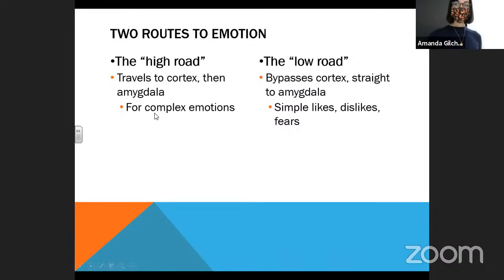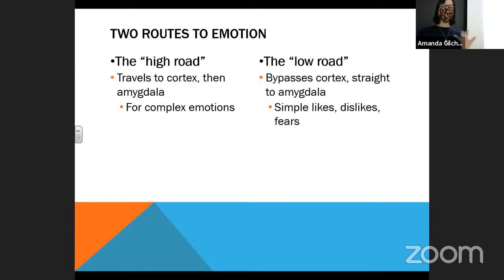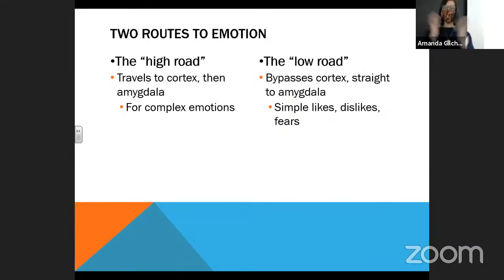On the other hand, we have the low road that bypasses the cortex and goes straight to the amygdala. If a snake ends up in this room, I am going to freak out — that is not something I have to think about very hard. I don't like snakes. On the other hand, is there something that you absolutely love that you don't have to think too hard about? Like it pops up and you go, 'Oh, this is so great!' — your cat, for example. That would probably take the low road of emotion — for a very simple like or dislike, I love it or I don't, without having to think too hard about it.